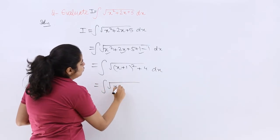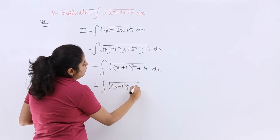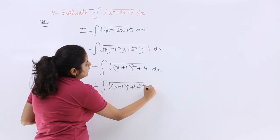What is 4? It is 2². So we have (x + 1)² + 2² dx.